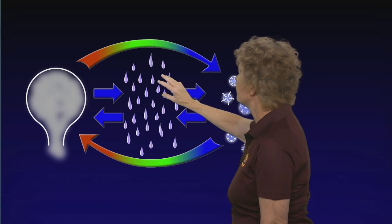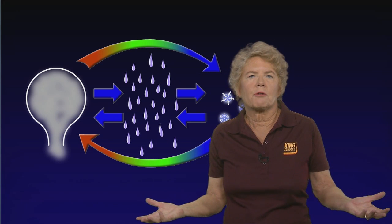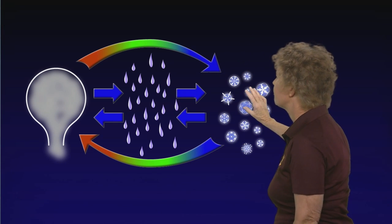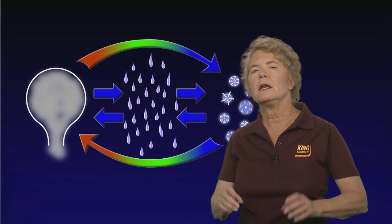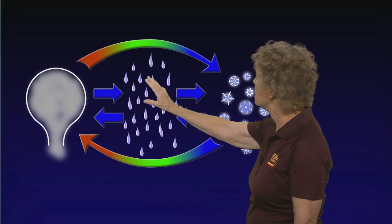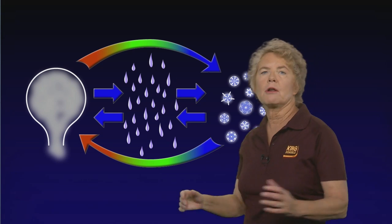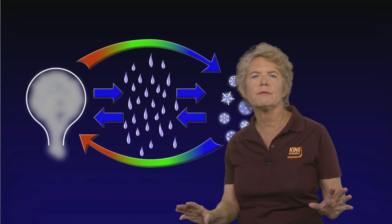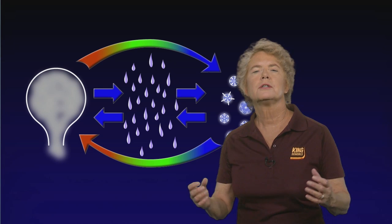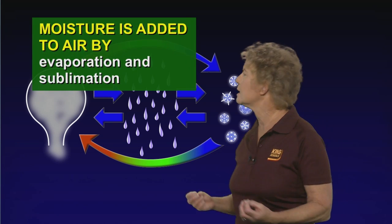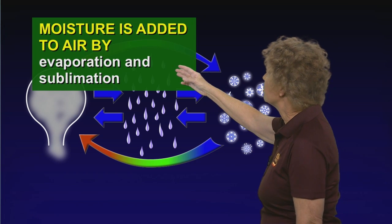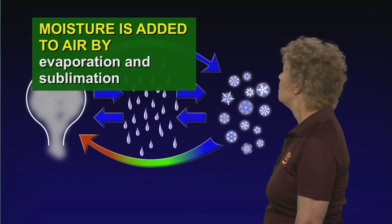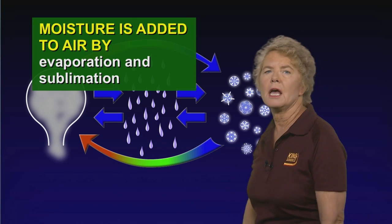If liquid water goes from the liquid state to the vapor state, that's evaporation. But sometimes the water vapor in the air completely skips the liquid state and goes directly to the frozen state — to form frost, for instance — and in that case we call it deposition. Coming back from the frozen state directly to the vapor state, not melting but going directly from frozen to vapor, that is called sublimation.